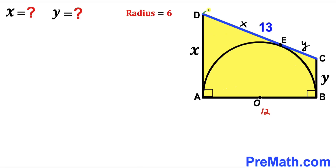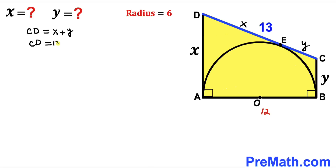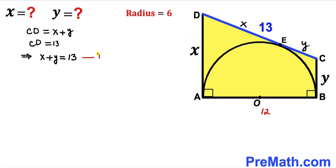Now we observe that the whole line CD equals DE plus EC, which equals X plus Y. We know side CD is 13 units, so therefore X plus Y equals 13. We label this as equation number 1.